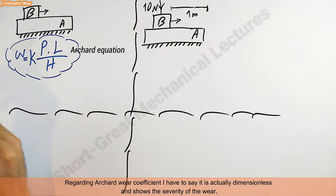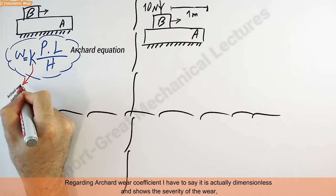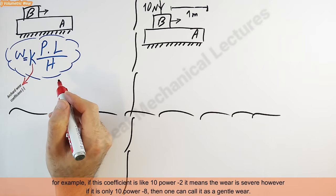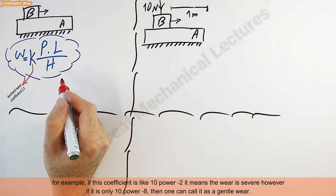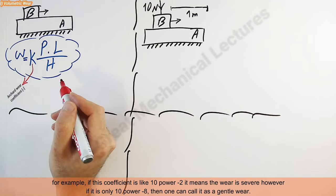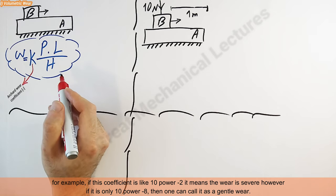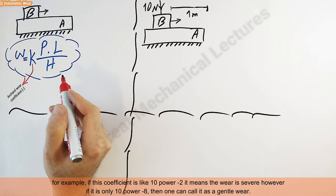Regarding Archard wear coefficient, I have to say it is actually dimensionless and shows the severity of the wear. For example, if this coefficient is like 10 power minus 2, it means the wear is severe. However, if it is only 10 power minus 8, then one can call it as a gentle wear.